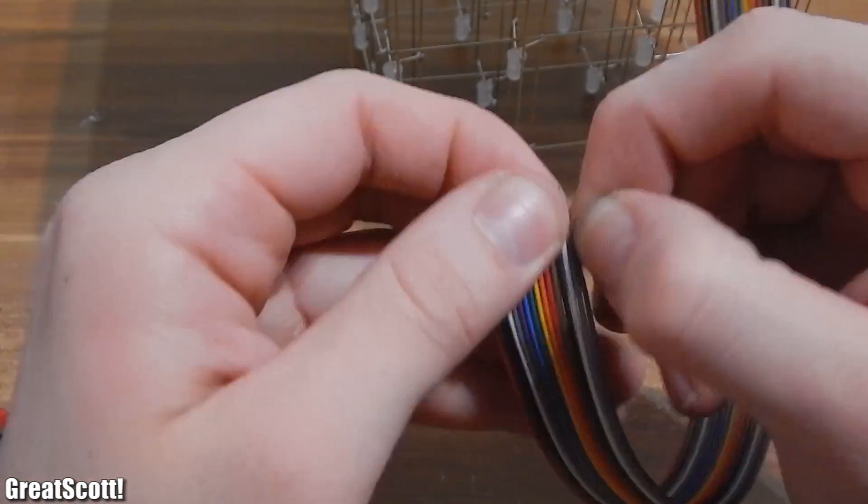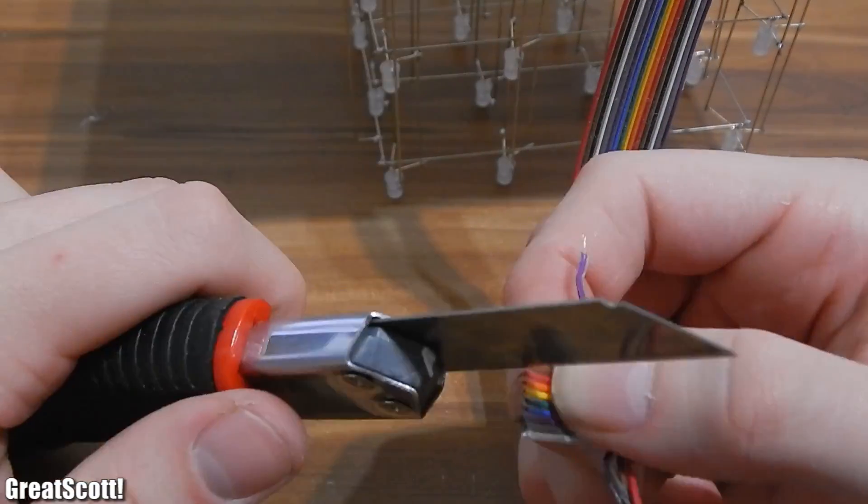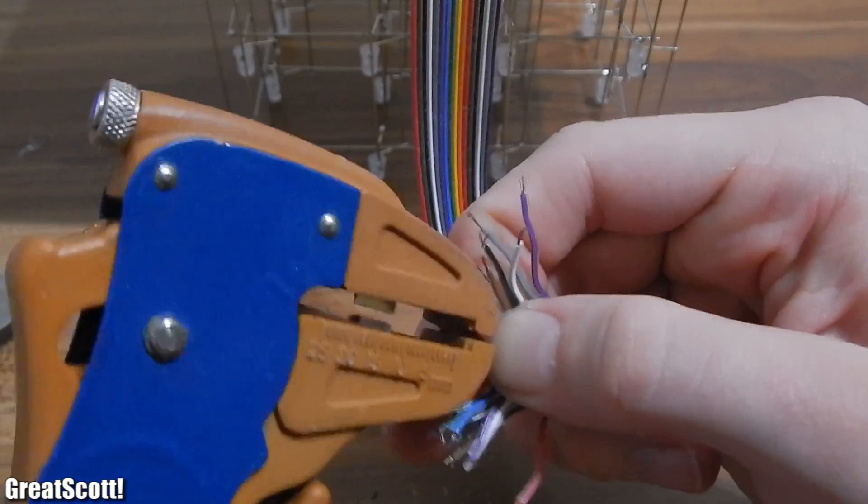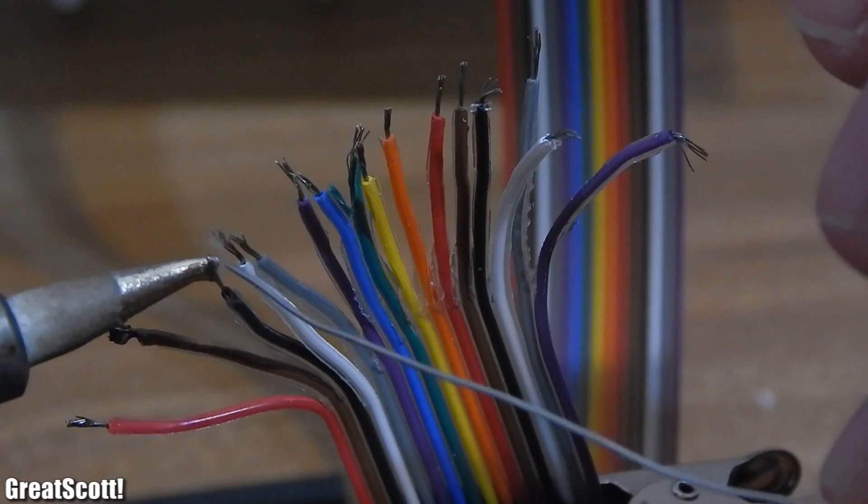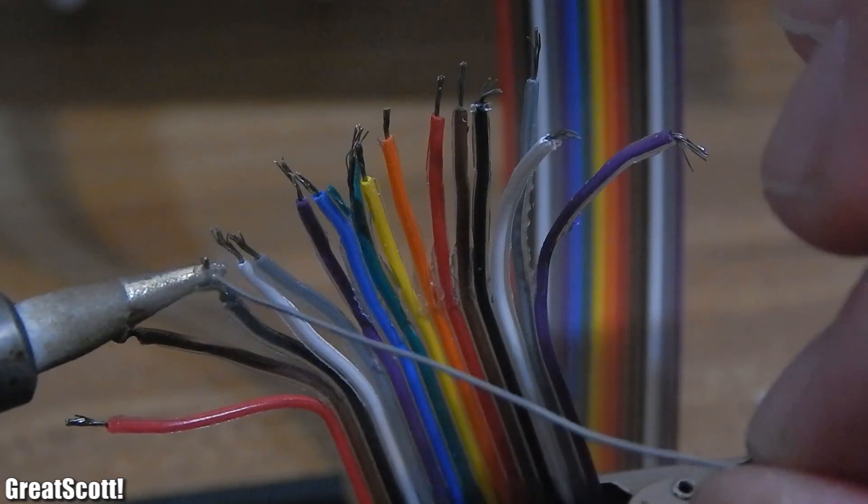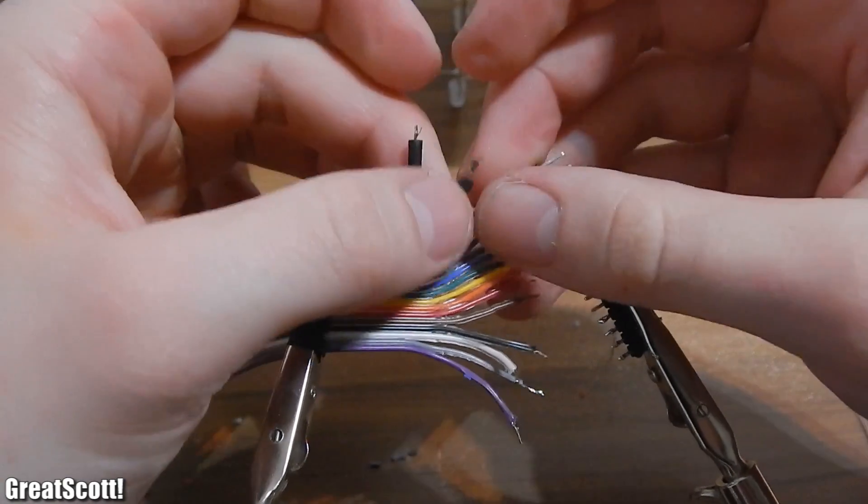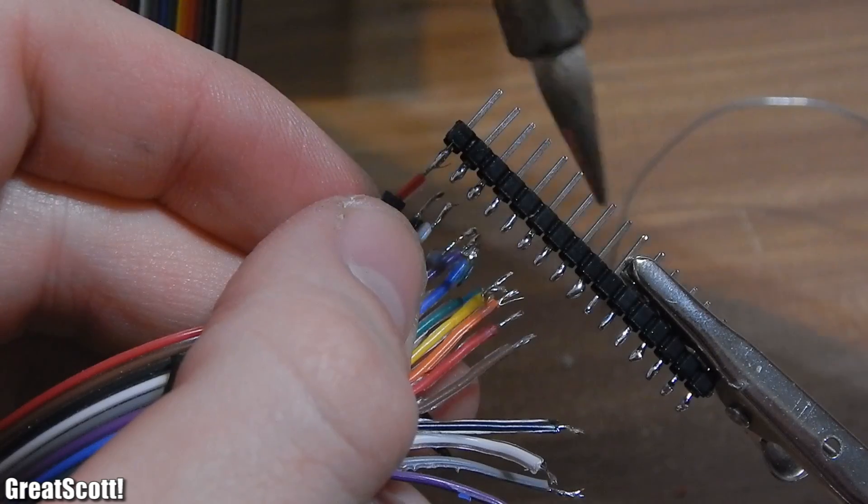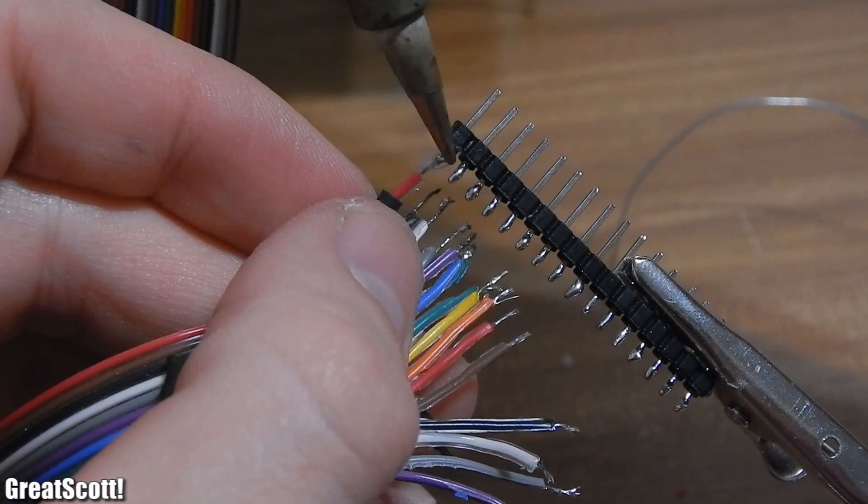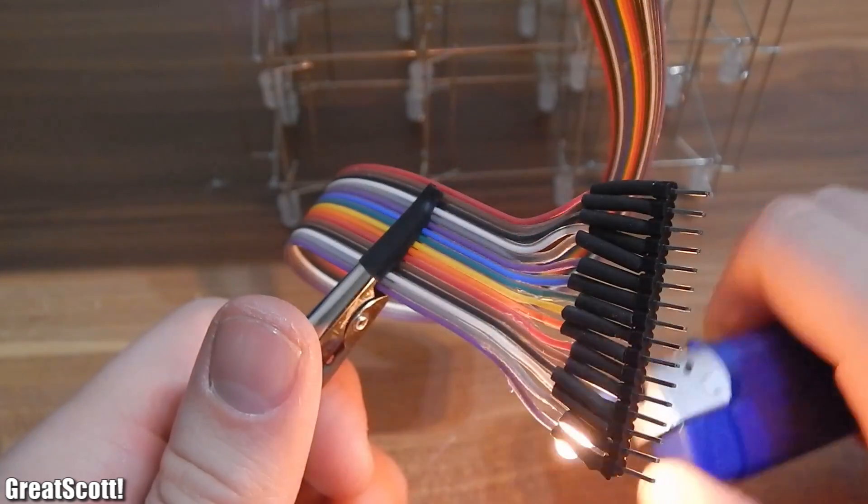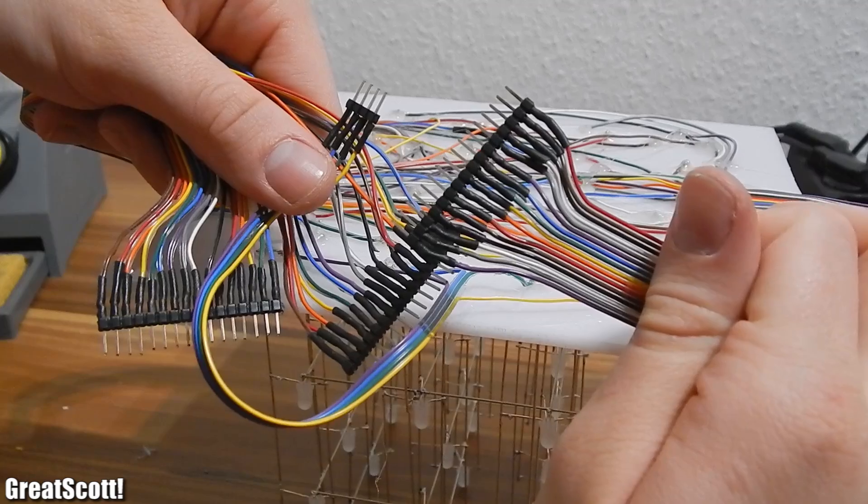The process is simple. I separate the ribbon cable with a cutter and strip the isolation of each cable. I use some solder to tin the tips and I also tin the male headers. I cut my shrinking tube and slide them over the ribbon cable. Now I solder the ribbon cables to the headers and use the shrinking tube to isolate them from one another. And done!